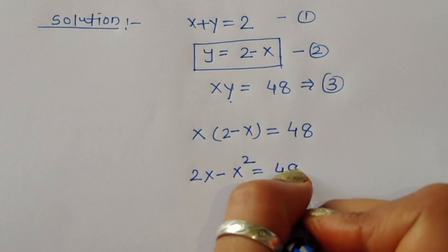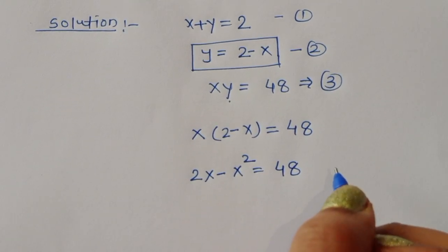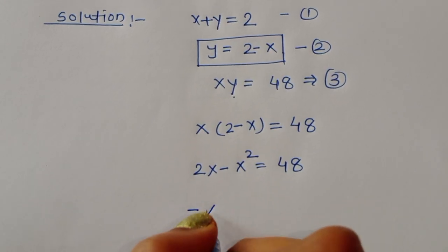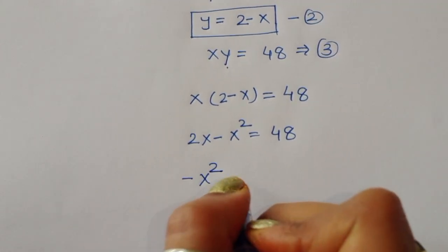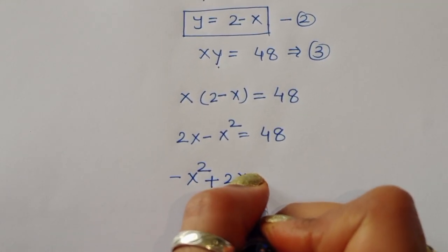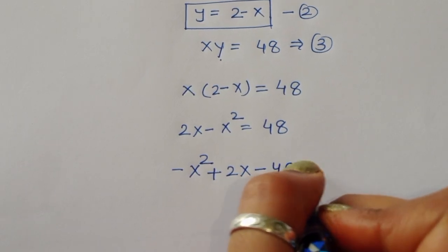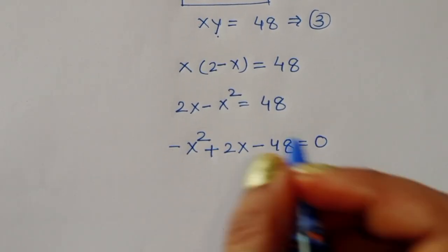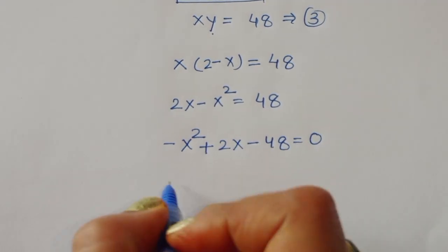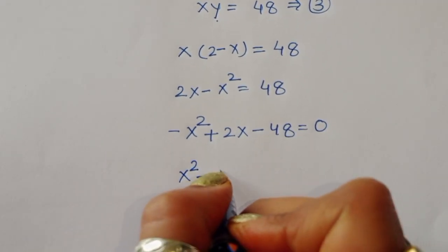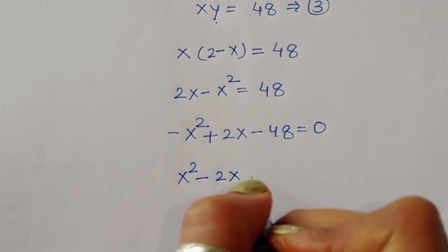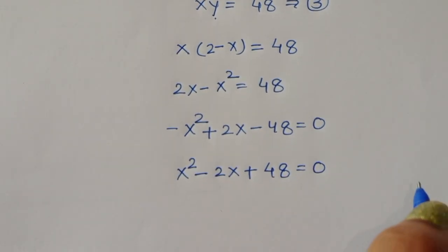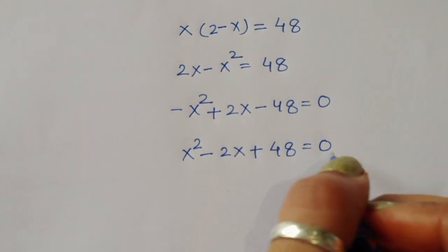From 2x minus x squared equal to 48, we rearrange to get minus x squared plus 2x minus 48 equal to 0. Multiplying through by minus 1 gives us x squared minus 2x plus 48 equal to 0.